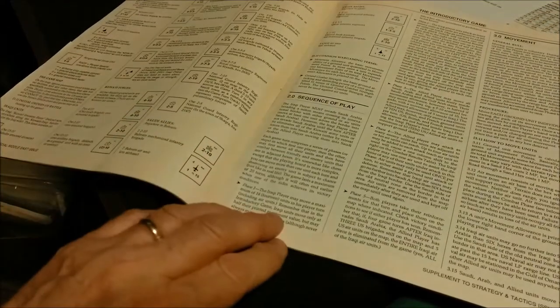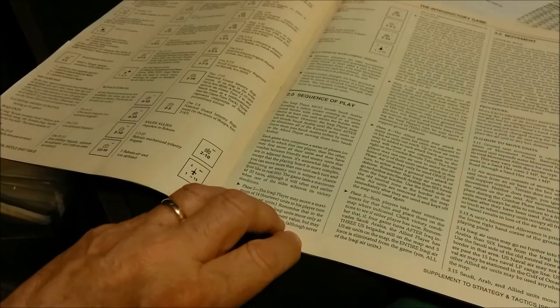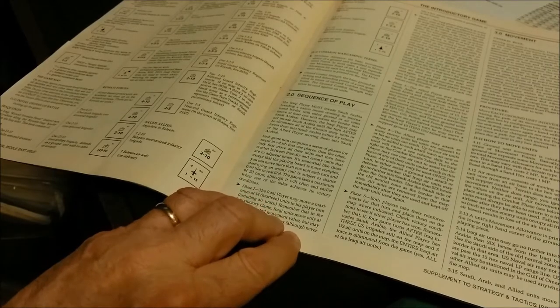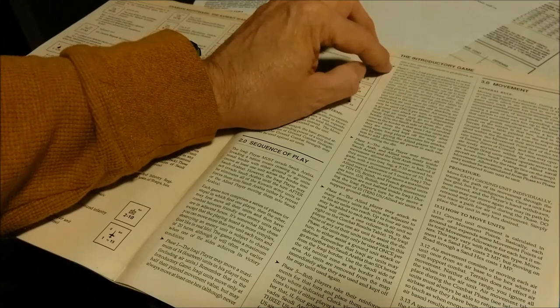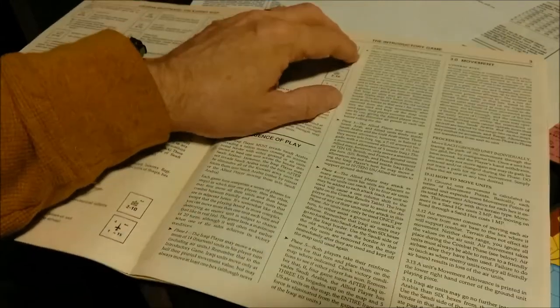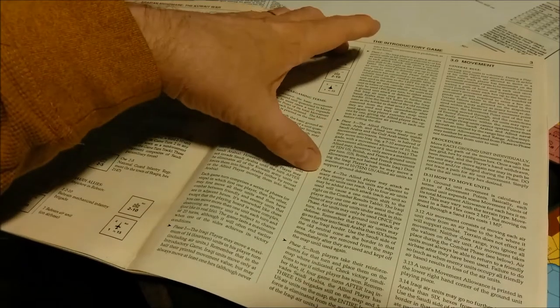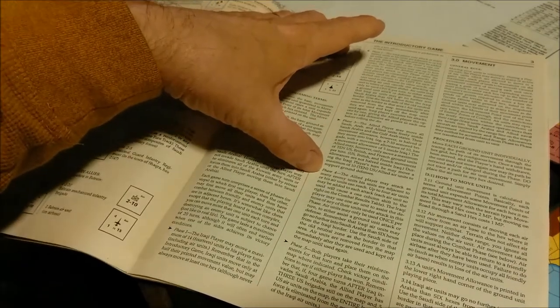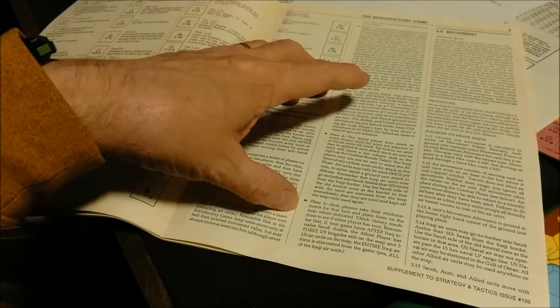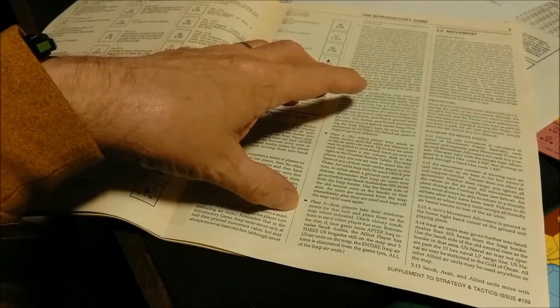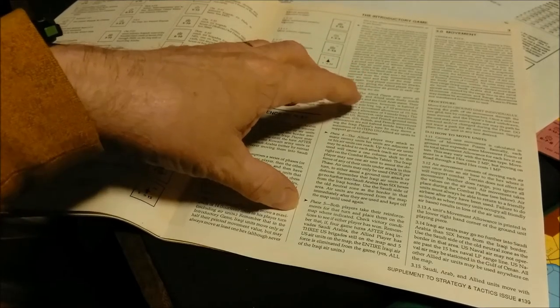We have the sequence of play. It's played in phases, basically. Phase one is the Iraqi player's movement. Phase two is the Iraqi player combat phase. Phase three, we have the allied player movement. Phase four is the allied player combat. And phase five is where we get reinforcements and check for victory conditions, that type of thing.